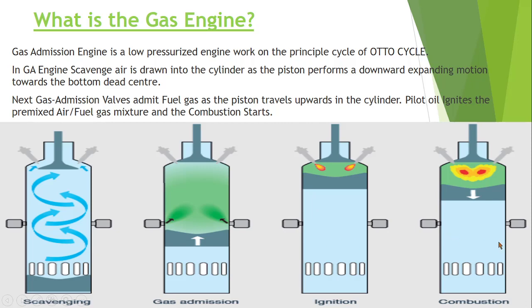Now the question comes: how is this different from the diesel cycle? In the diesel cycle, only air is compressed, and diesel is injected at TDC where auto-ignition temperature is reached. But in the gas admission engine, the gas is injected when the piston just covers the scavenge port and is moving up, so a gas-air mixture is formed. The micro booster injection valve then injects a very small percentage of diesel to ensure sufficient temperature is reached for combustion.